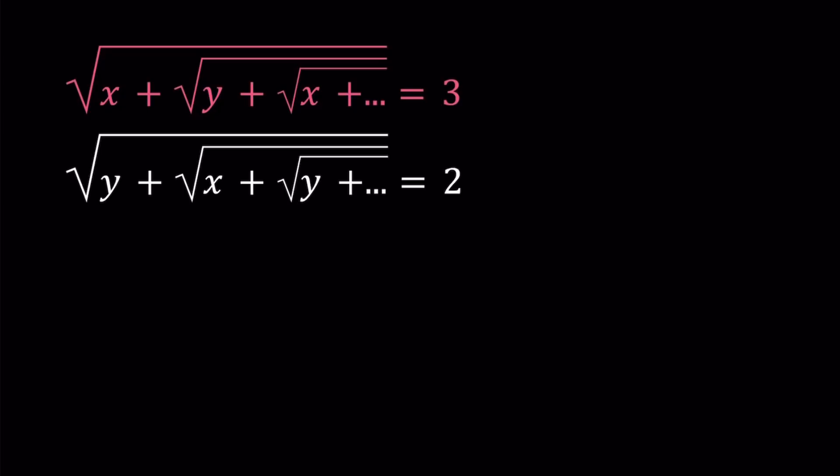and they're both infinite radicals with the x and y alternating, but one of them starts with x and the other one starts with y. And it's kind of interesting because you get different results, when obviously x and y are different. Okay, I'll be presenting two methods, and let's start with the first method.